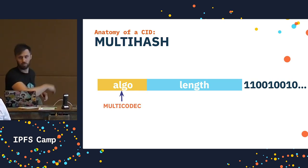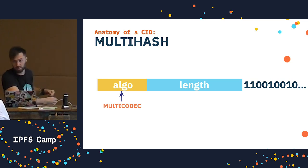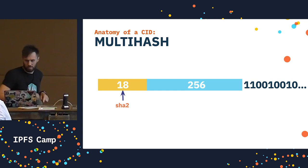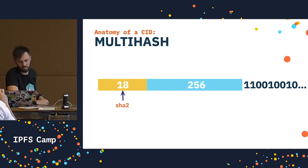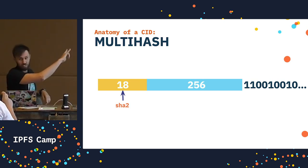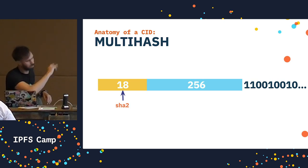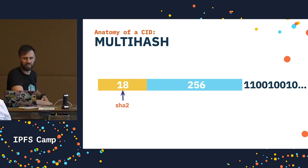These two numbers are both varints — a compact encoding for integers. The algo number is a multicodec, because it's a varint whose value is a predefined value agreed upon in a table on the internet. The multicodec identifier for SHA-256 is the number 18, and our hash length is 256. The hash length is actually two bytes long because the length is over 127, and in varint encoding, numbers above 127 are encoded as two bytes.